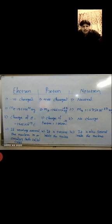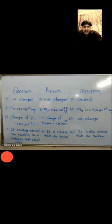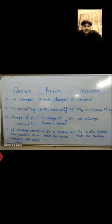Similarly, protons are positively charged particles present inside the nucleus. The charge of one proton is 1.602 × 10⁻¹⁹ coulomb and the mass of a proton is 1.667 × 10⁻²⁷ kg. Similarly, neutrons are neutral particles also present inside the nucleus — they have no charge, and the mass of a neutron is 1.675 × 10⁻²⁷ kg. This tabular form helps you simply understand all these subatomic particles.